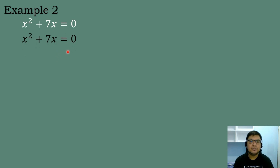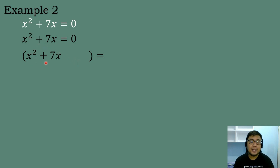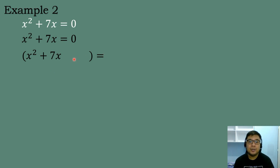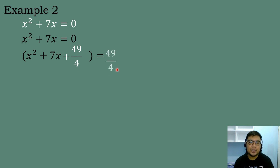For the next example, we have x squared plus 7x is equal to 0. Since there is no constant term, we leave the equation as is and place an open parenthesis with x squared plus 7x and a blank. The numerical coefficient of the linear term is 7. We divide 7 by 2 to get 7 over 2, then square it: 7 over 2 times 7 over 2 equals 49 over 4. We put positive 49 over 4 in the blank and also add it to the other side.